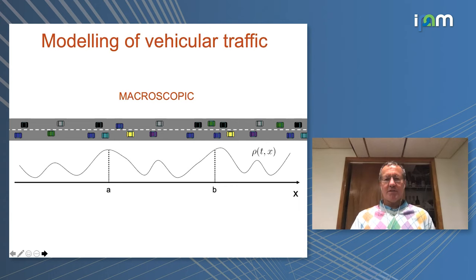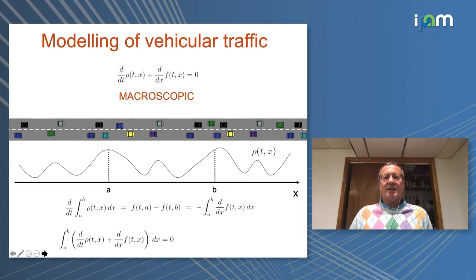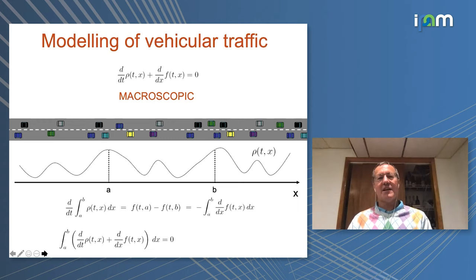Taking two points in the road, you write the derivative of the integral — how the number of cars between A and B changes. This is given by the flux in A (cars entering) minus the flux in B (cars exiting). By the fundamental theorem of calculus and a bit of algebra, you end up with the well-known conservation law. The LWR model amounts to recognizing that the flux F is density times speed, and assuming that speed depends just on density — closing the relation as first order. These are the two opposite scales, with quite a bit of scales in between and multi-scale approaches. Now let's think about other systems that share some common features with this one.